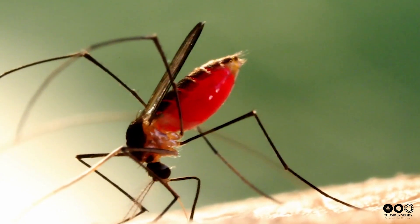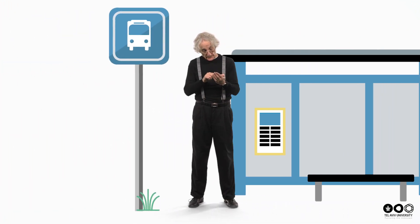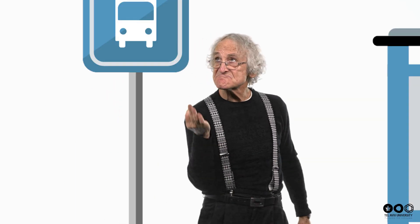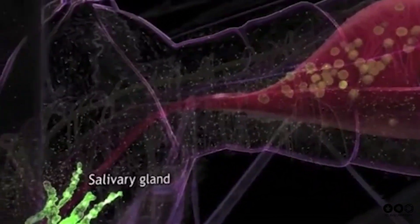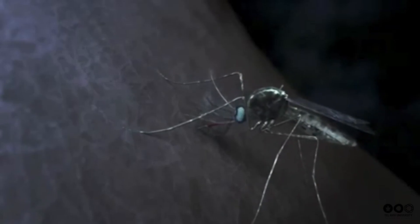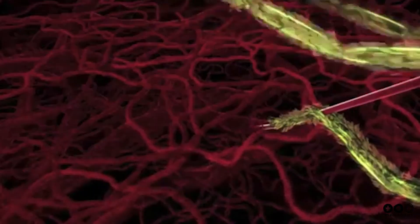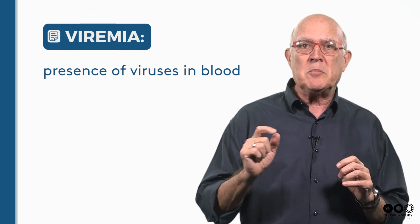Mosquitoes, for example, normally feed on nectar, but the female needs extra nutrition and protein before laying her eggs. This she gets from a blood meal, which we experience as a mosquito bite. The mechanism of drawing blood is rather interesting. The mosquito uses two separate tube-like mouth parts in the process. When the female mosquito punctures our skin, she pierces small blood vessels and secretes through one of the tubes special saliva that prevents blood from clotting. Then, through a second separate tube, she draws blood. If the bitten person happens to be viremic — that is, contains infectious viruses in the blood — then that blood meal may be contaminated.